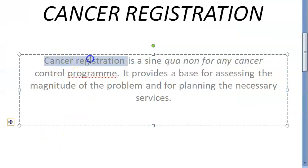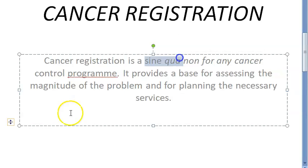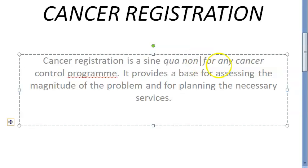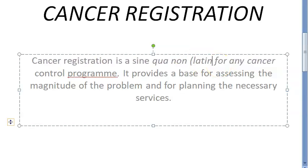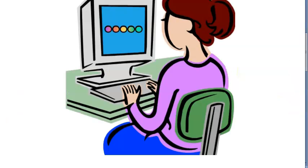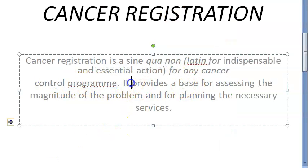Cancer registration is a sine qua non for any cancer control program. Sine qua non — what does this mean? It was originally a Latin legal term meaning 'without which it could not be' — something you cannot do without. So sine qua non means indispensable or essential action. Registration of cancer is an essential action for any cancer control program.